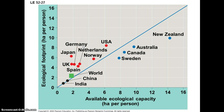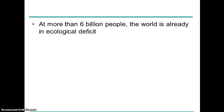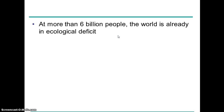That might very well be the case — it's the kind of thing we talk about in environmental science classes. This number is a little outdated; we're now over 7 billion people. We'll see what happens. That's it for Chapter 3.